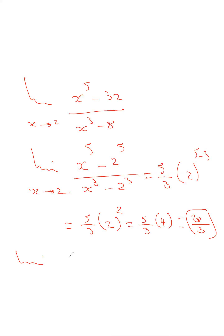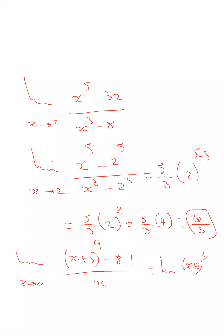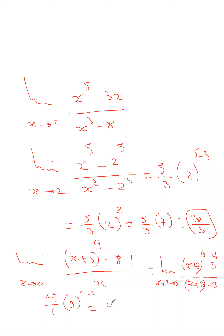Another example: limit of (x+3)^4 minus 3^4 divided by x, as x tends to 0. We rewrite the denominator by adding 3 and subtracting 3 to match the numerator's form, giving: limit of (x+3)^4 minus 3^4 over (x+3) minus 3, as x+3 tends to 3. Applying the theorem: it equals 4 over 1 times 3^(4-1), which is 4 times 3^3, which is 4 times 27, equaling 108.